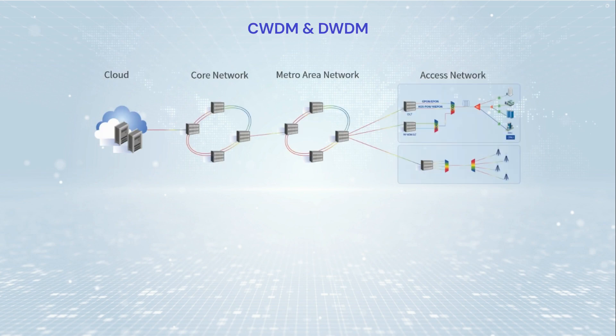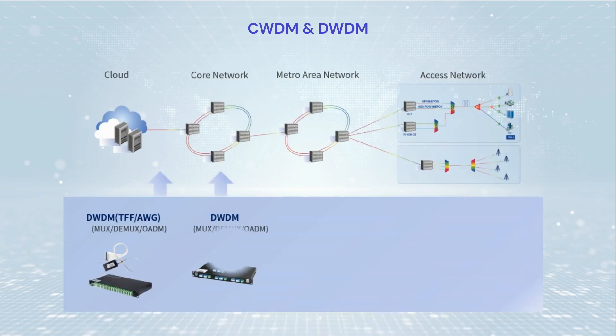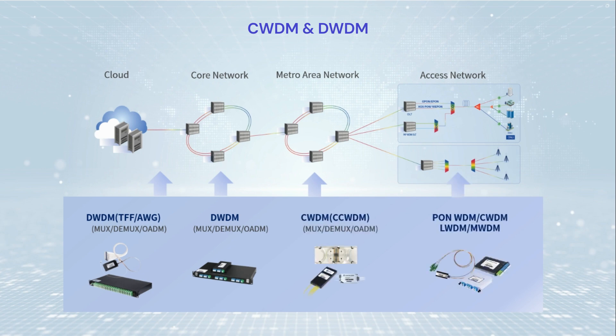CWDM and DWDM are two main WDM technologies with different wavelength patterns, capabilities, costs, and applications.